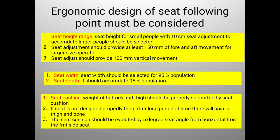For ergonomic design of the seat, the following points must be considered. Seat height range: for small people, a 10-centimeter seat adjustment should be selected to accommodate larger people as well. Seat adjustment should provide at least 150 millimeters of floor and arm movement for large-size operators. The seat should also provide 100 millimeters of vertical movement from top to bottom.